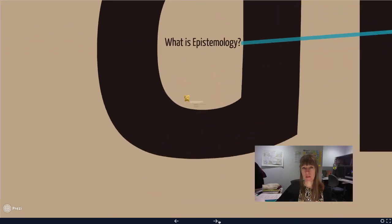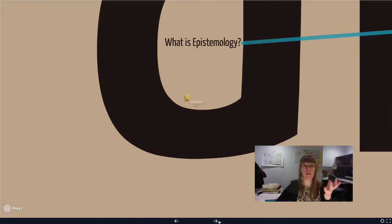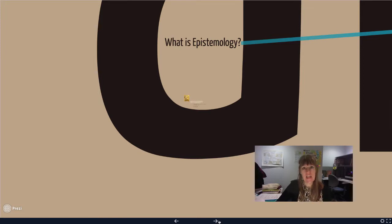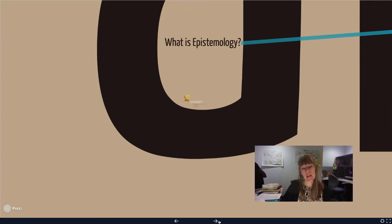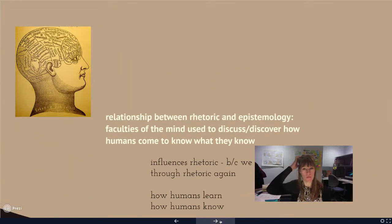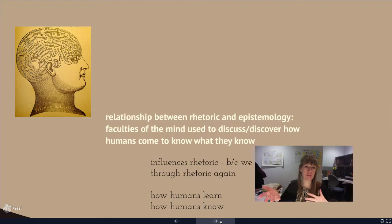The first thing we're dealing with is epistemology, which is very heavily influenced by the Renaissance, especially the Renaissance of rhetoric from the last video. Now that we have time and money to become patrons of art again, we're also going to start thinking. We're going to start trying to understand what it means to think, what is thinking, and how do we use thinking to make knowledge. The big question is: what's the relationship between rhetoric and epistemology?